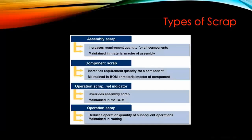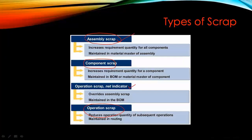There are three types of scrap as discussed. The first is assembly scrap, which increases the requirement quantity of all the components maintained in the material master of the assembly. Then we have component scrap, and the third is operation scrap, which is required with operation scrap.